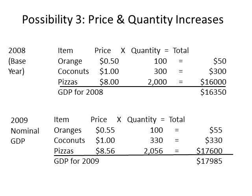A third scenario is probably the most realistic of the three. In 2008, oranges sell for $0.50 and 100 oranges are sold, adding $50 to GDP. Coconuts sell for $1 each and 300 coconuts are sold, adding $300 to GDP. Pizzas sell for $8 and 2,000 pizzas are sold, adding $16,000 to GDP, giving a GDP of $16,350.